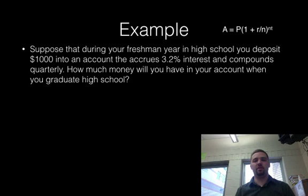In this example, suppose that during your freshman year in high school, you deposit $1,000 into an account. Let's say you somehow inherited some money or something, and you put it into an account that accrues 3.2% interest, maybe it's a CD or something, and it compounds quarterly. So that means quarterly means four times a year. Quarter, four, four times a year. So how much money will you have in your account when you graduate high school?